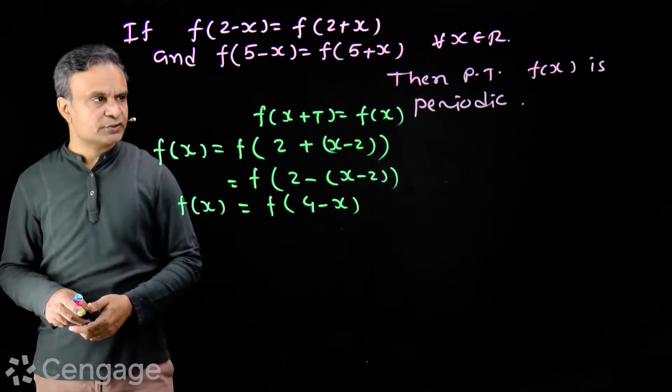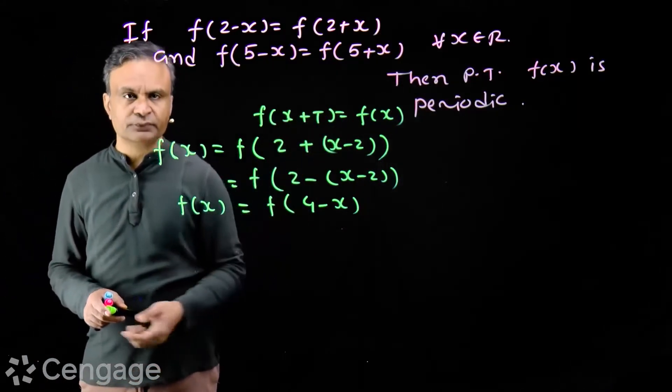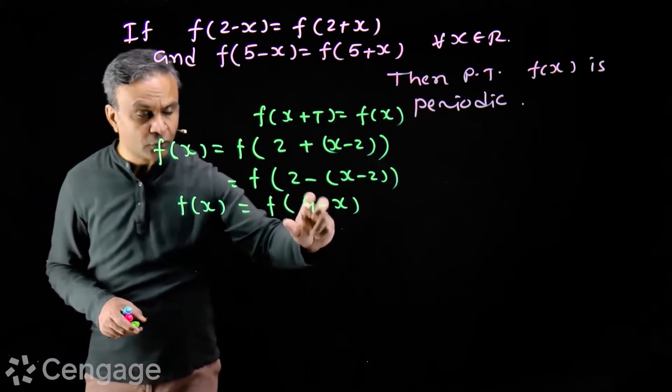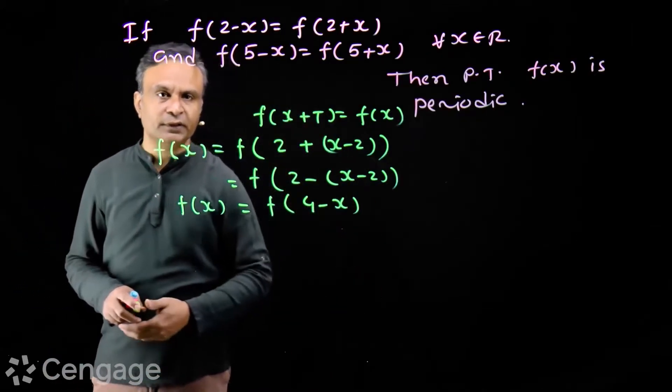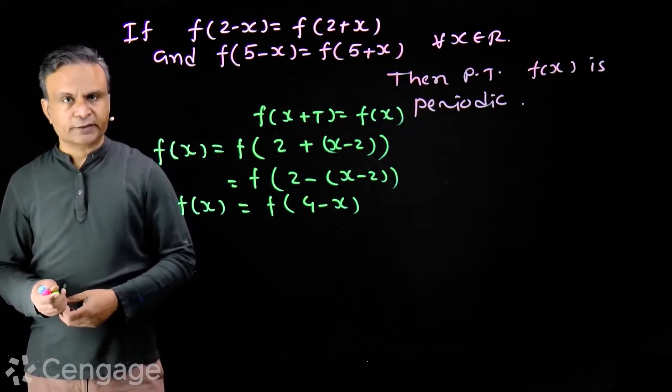For periodic function, you must have this type of equation. But here we have f(4-x). So what do we do next?